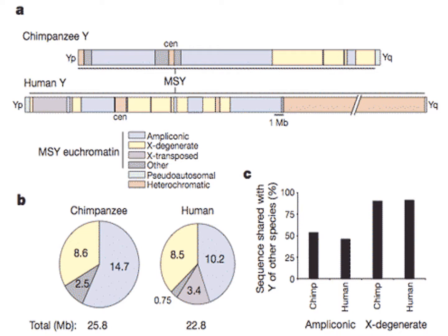The Y chromosome for chimps had never been completely sequenced and mapped directly before this study was performed. It showed many striking differences between human and chimp chromosome structure, gene content, and even qualitatively unique genes between the two species.